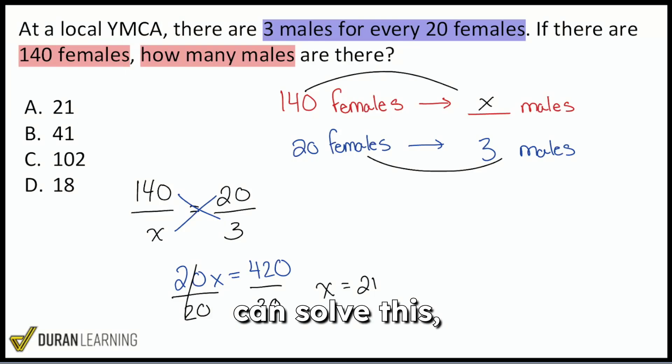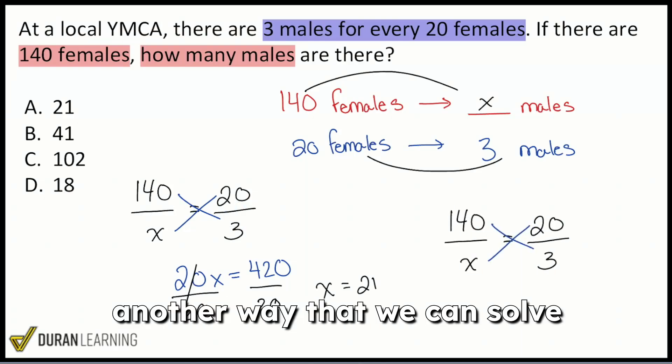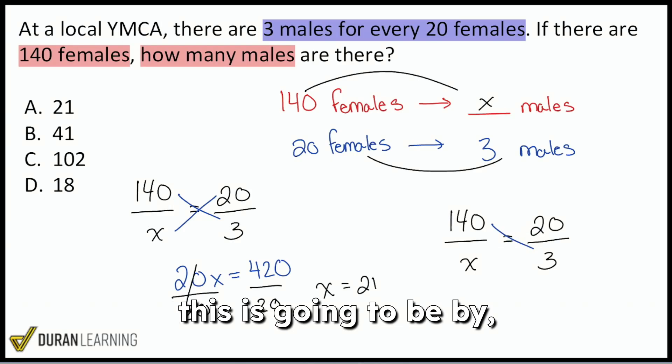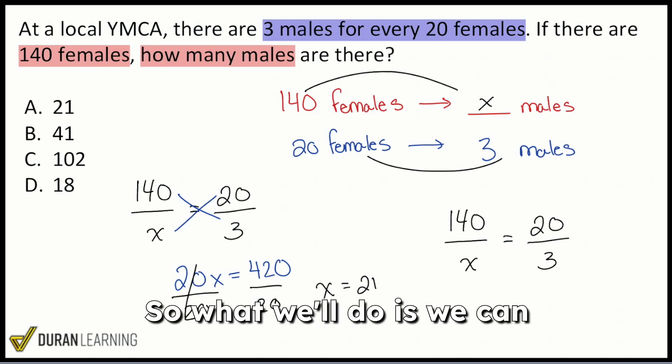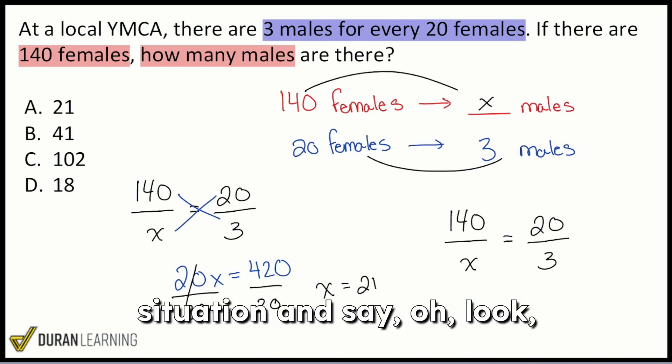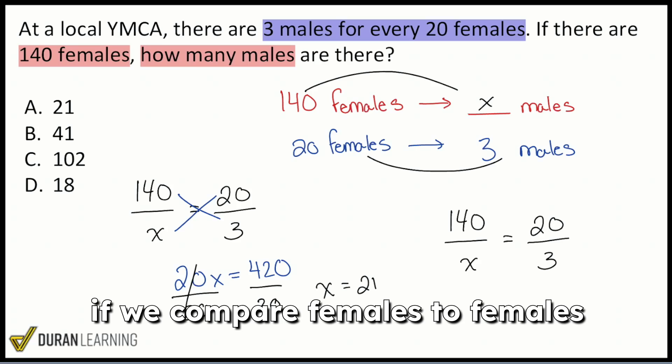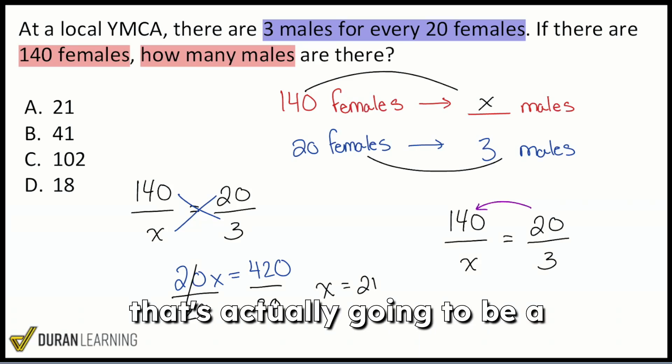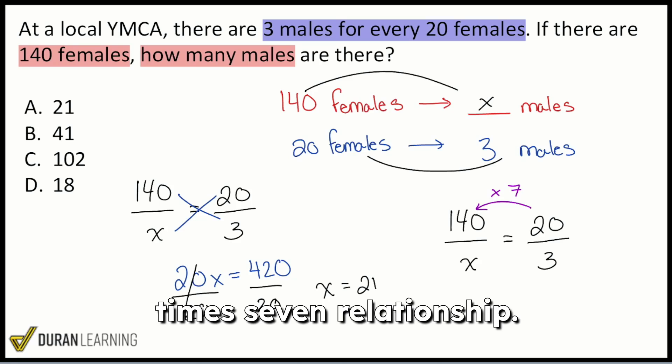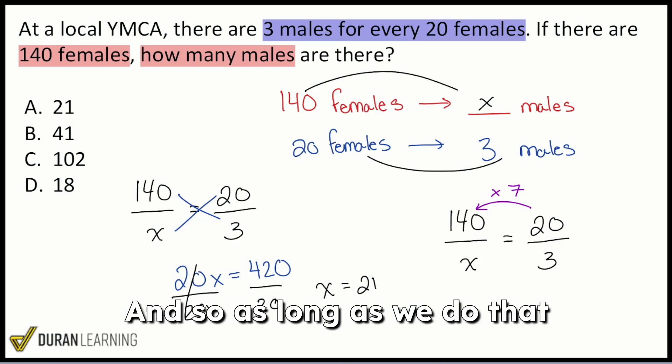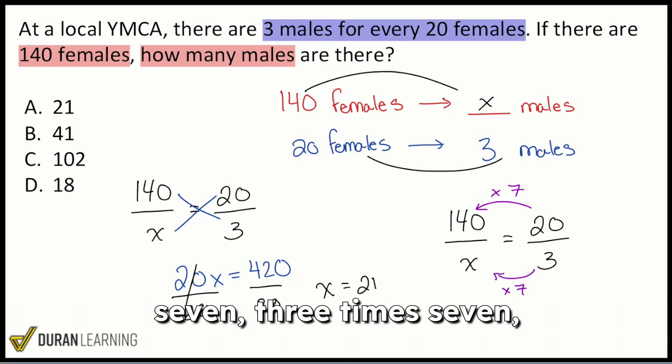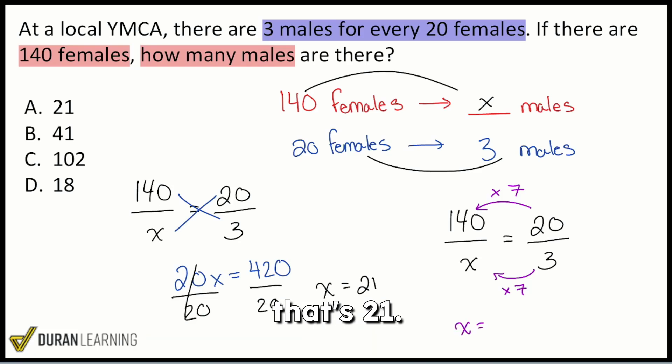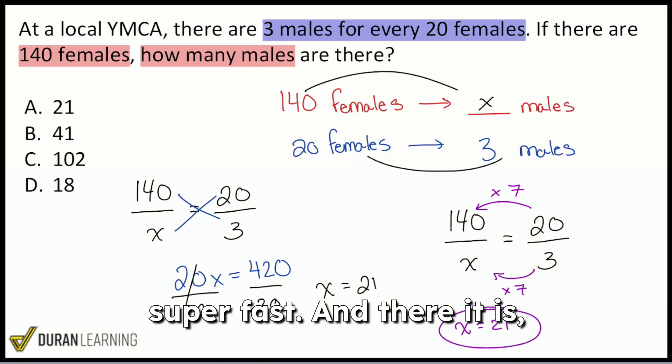Now another way that we can solve this, and I'll just go ahead and push this right over here. Another way that we can solve this is going to be by just like I said, comparing the same things in the same way. So what we'll do is we can actually notice a convenient situation and say, oh, look, if we compare females to females up top, right to left, that's actually going to be a times seven relationship. And so as long as we do that same comparison right to left on the bottom, it is the same exact scale or same exact multiplier times seven, three times seven, that's 21. And we can get this problem done super fast. And there it is, my math party people.